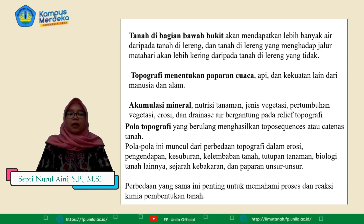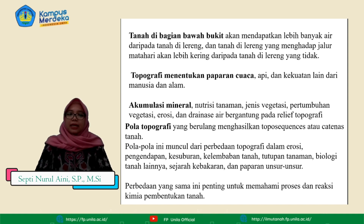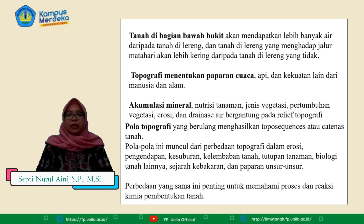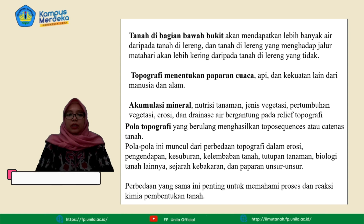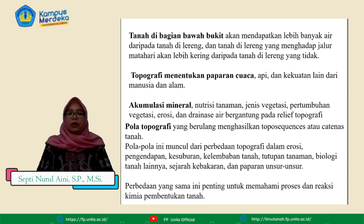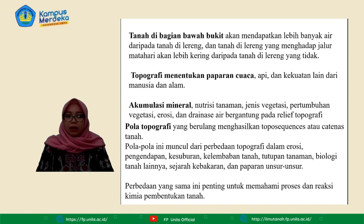Tanah di bagian bawah bukit akan mendapatkan lebih banyak air daripada tanah di lereng, dan tanah di lereng yang menghadap jalur matahari akan lebih kering daripada tanah di lereng yang tidak menghadap jalur matahari. Topografi menentukan paparan cuaca, api, dan kekuatan lain dari manusia dan alam. Akumulasi mineral yang dipengaruhi oleh nutrisi tanaman, jenis vegetasi, pertumbuhan vegetasi, erosi, dan drainase air ini bergantung pada relief topografi.